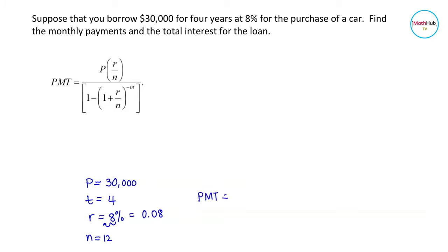PMT is equal to P is 30,000 times rate is 0.08 all over N, which is 12, divided by 1 minus parenthesis, 1 plus the rate 0.08 divided by 12 raised to negative 12 times 4. So this is your denominator.